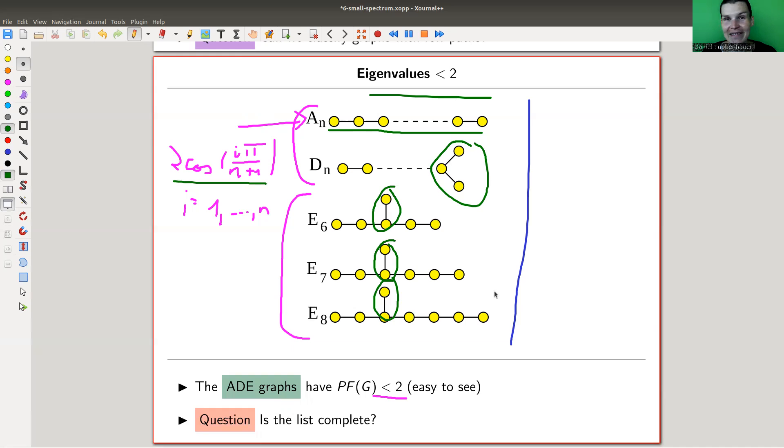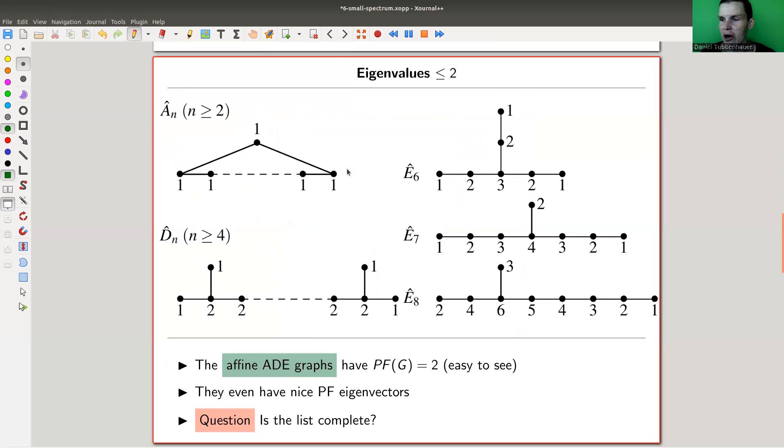Turns out that these ADE graphs kind of appear everywhere in mathematics, like they pop out, and oh, you have some problem and the solution is it's an ADE graph problem. Very strange. Really, really great. So try to remember those graphs. Very simple. There are three exceptions. Otherwise, it's a line and the line with a little fish tail at the end.